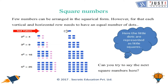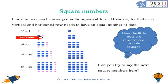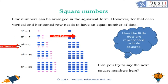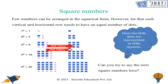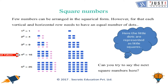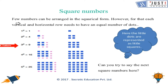If you have one squared — one times one — that gives you one dot. Two squared is four, so you have four dots. Three times three gives you nine dots. Notice that every square number, when arranged as dots, forms a square shape.